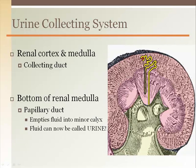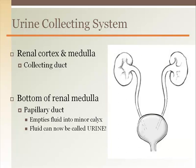The fluid enters the minor calyx and can now be called urine. The minor calyces drain into the major calyces, then the renal pelvis, and out the ureter.